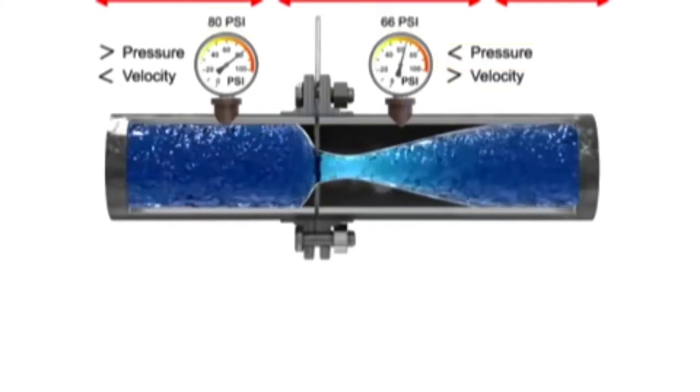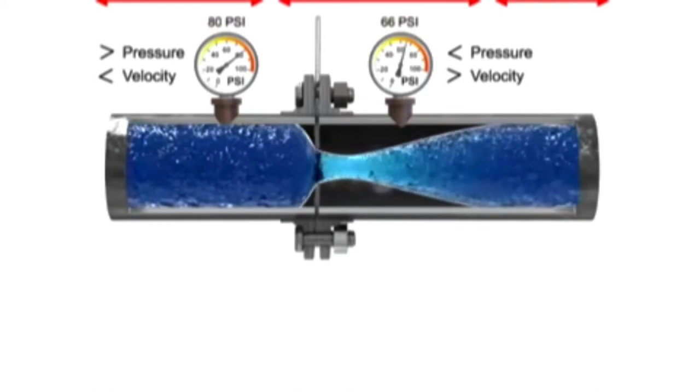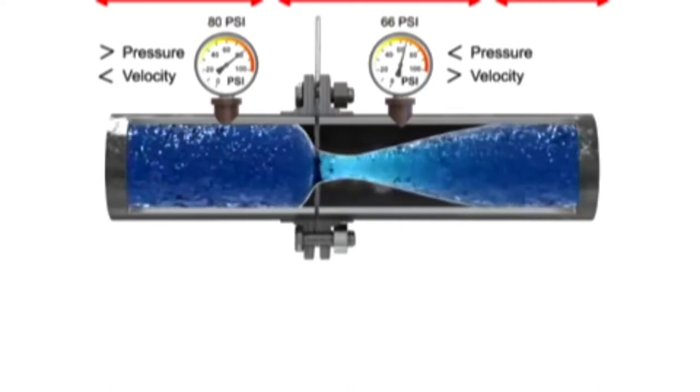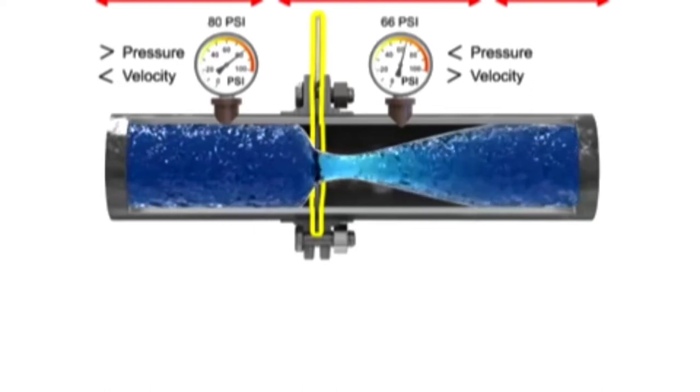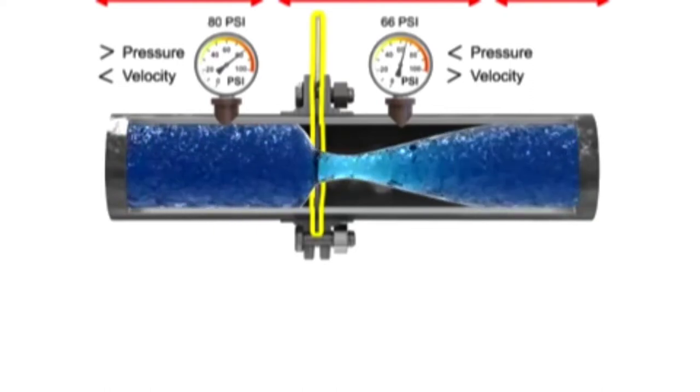As the fluid flow rate increases through the pipe, back pressure on the incoming side increases due to the restriction of flow created by the orifice plate.